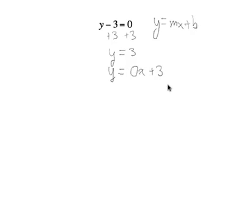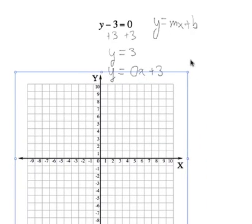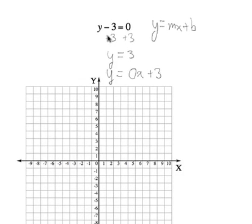And this equation can be graphed very simply. If you just use what we know about slope intercept, we have the y intercept is 3. And my slope is 0, which means I rise 0 and I run as many spaces as I want. I can run to the right or I can run to the left.